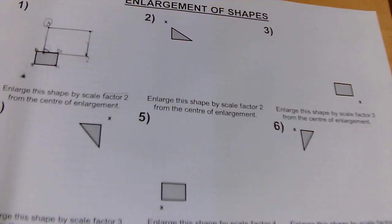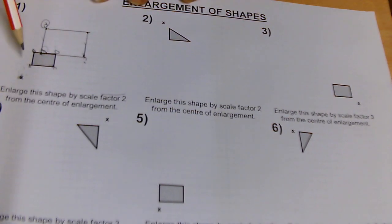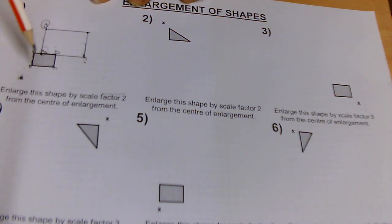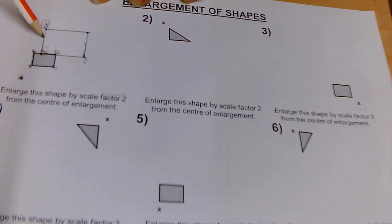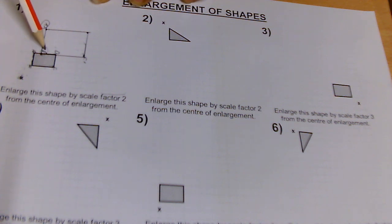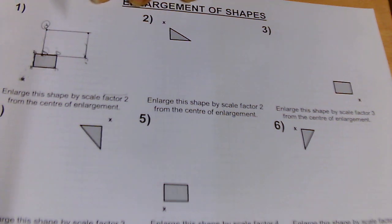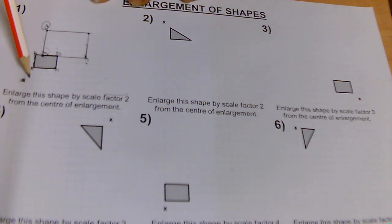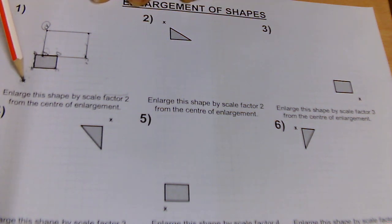Now we can use the boxes to see if this is actually right. We have two boxes here, so two boxes times two should give us four boxes on here — one, two, three, four. And then we have one, two, three boxes here, and we should have six on the enlarged one, which is one, two, three, four, five, six.